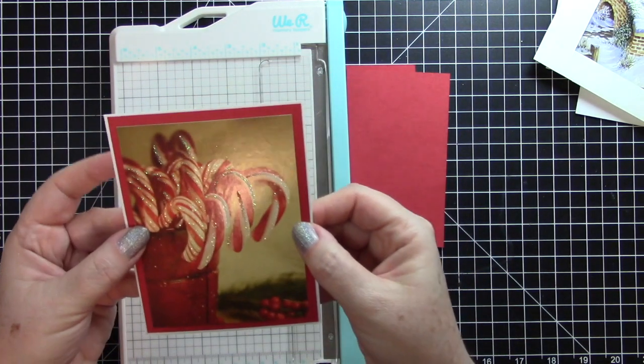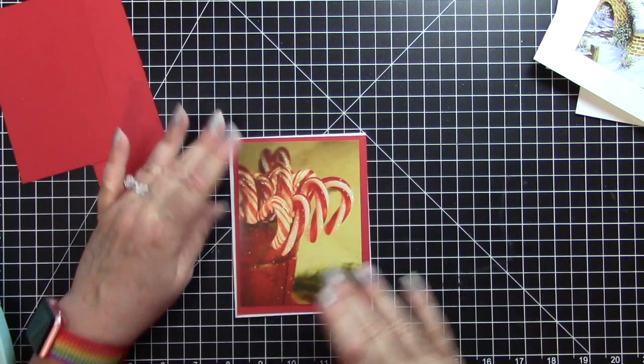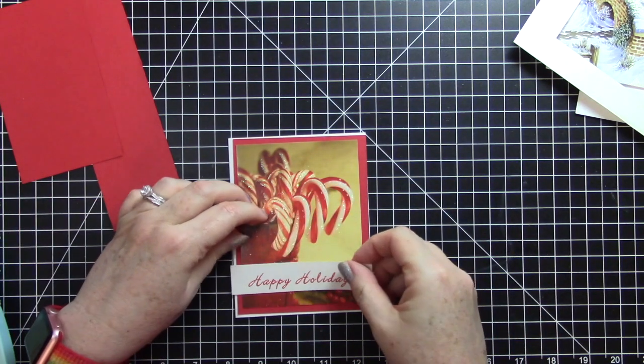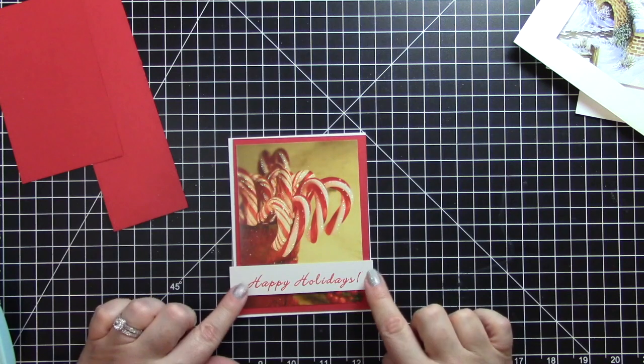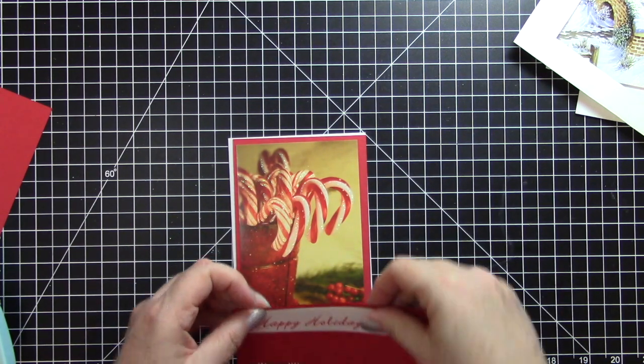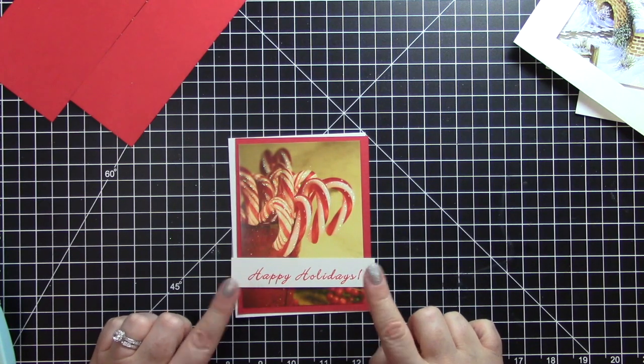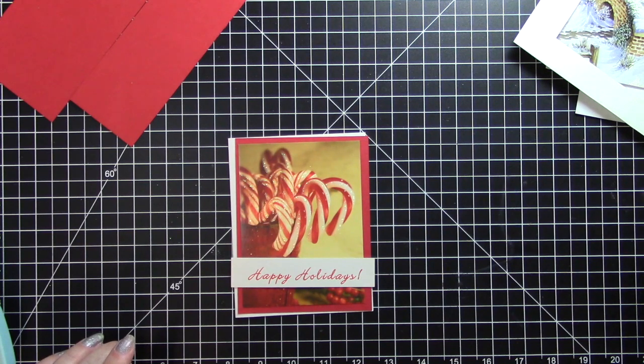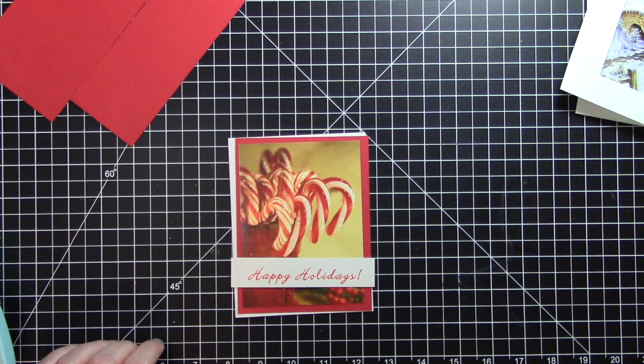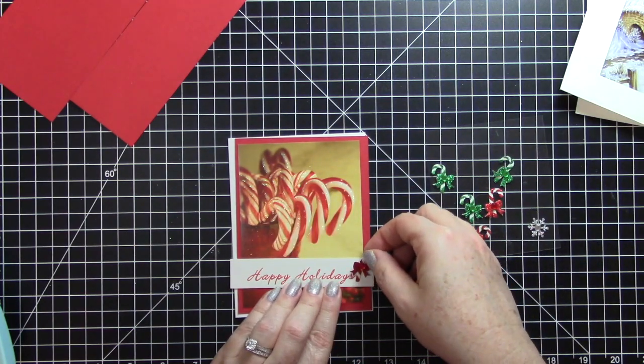I like the way that looks. Now this card could pretty much be considered done, but I'd like something to take up some of this room. I found this sentiment in my stash of card scraps and I thought it would go cute along the bottom. I'm thinking maybe just the white will stand out. I have these little candy cane stickers that I could put on each side of it. Yeah, I like that. I think that'll dress it up.